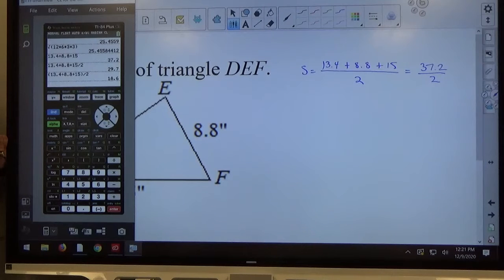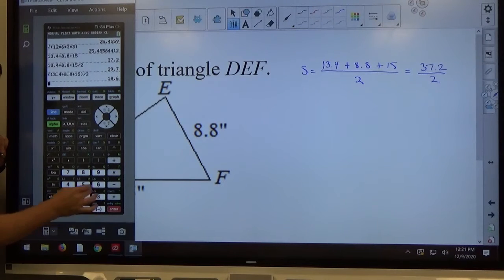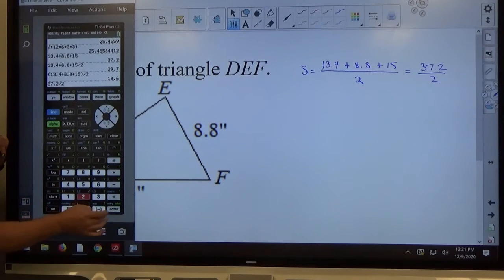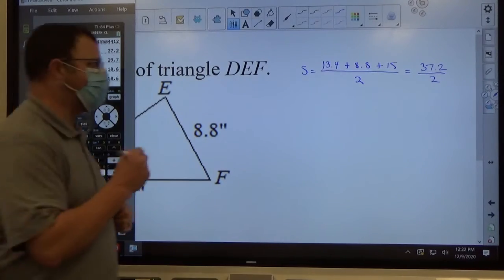I personally would evaluate the top completely, hit equals, write it on my paper, evaluate the bottom completely, hit equals, write it on my paper, and then type in 37.2 divided by 2, and I get 18.6, which is correct.